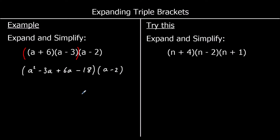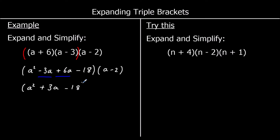Now we're going to collect like terms for what is now our first bracket. So we've got negative 3a plus 6a, which is 3a. So we've got a squared plus 3a minus 18 in the first bracket now, and (a - 2) in what is now the second bracket.